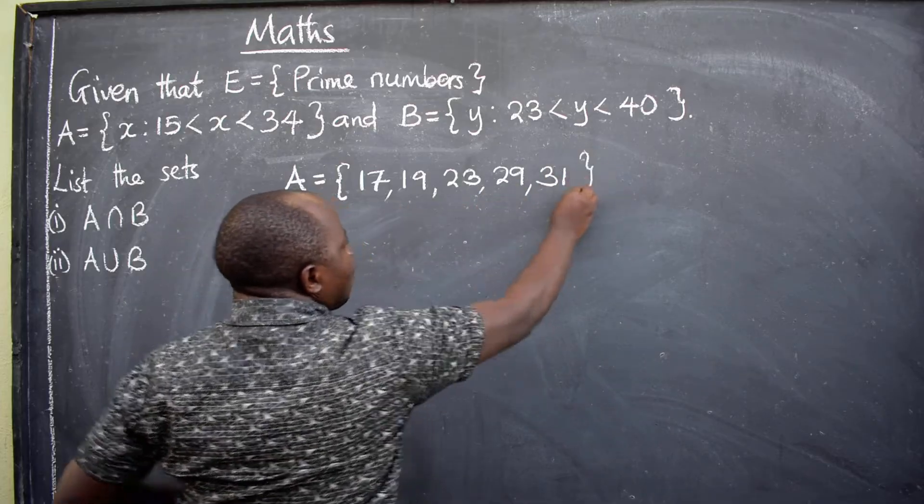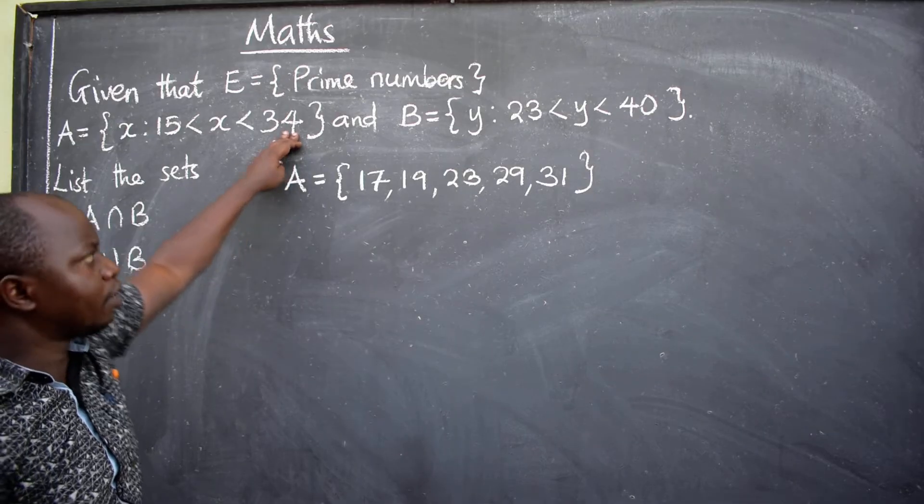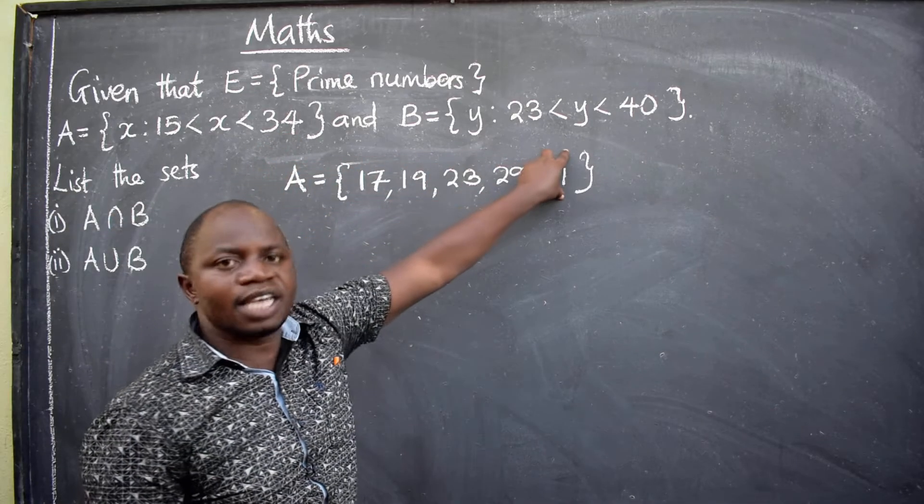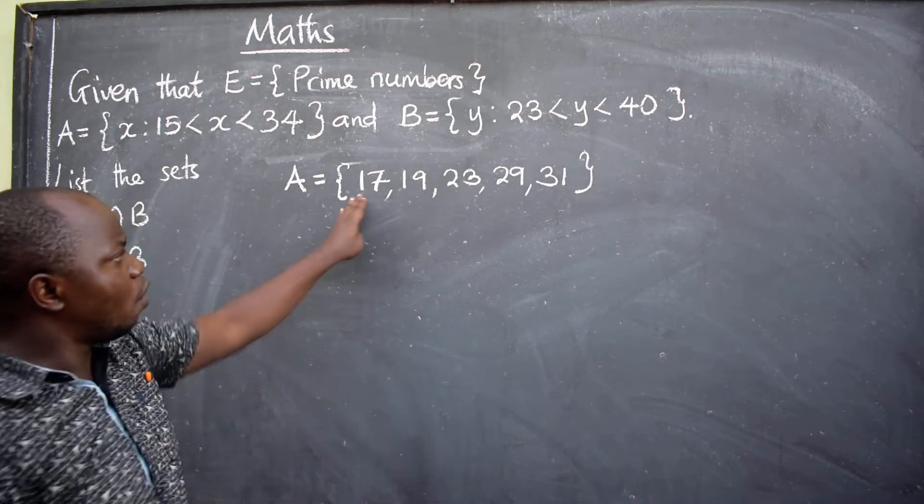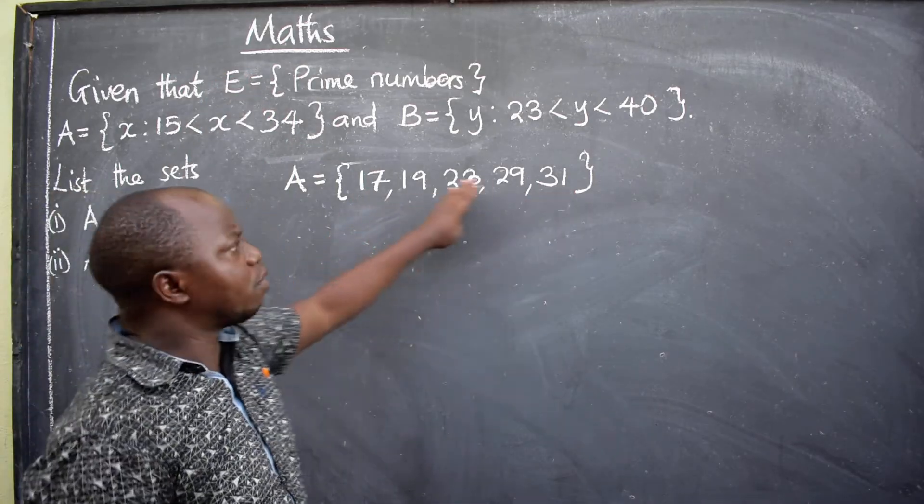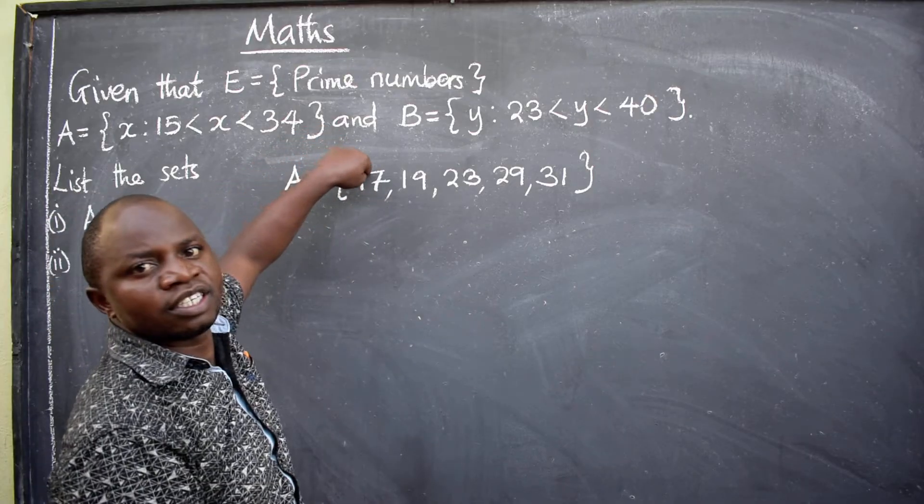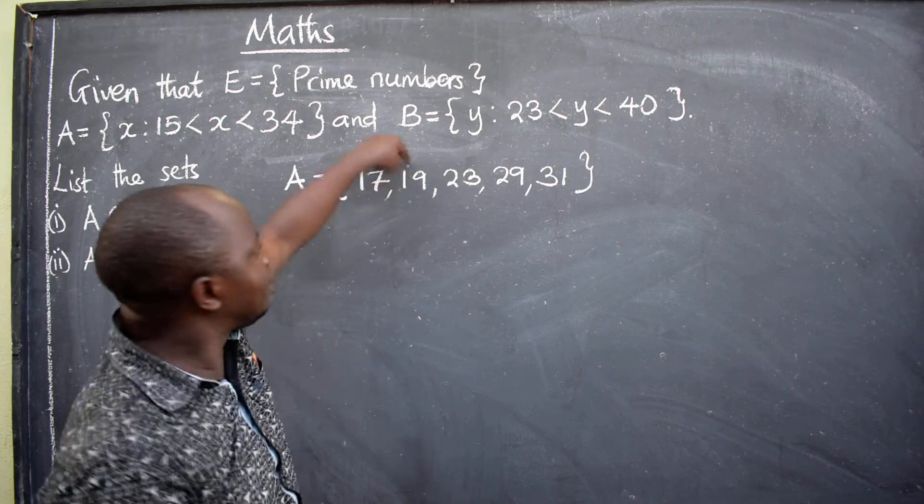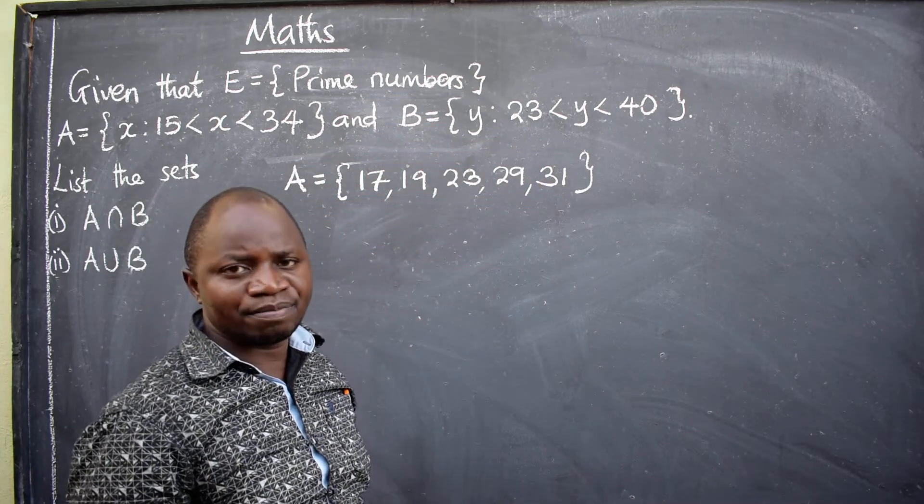So, these are the only prime numbers within this range. So, this is set A. This is what they mean. All these, if you test them, they've got only two factors, one and itself. So, it's only one times 17, one times 19, one times 23, one times 29, one times 31.